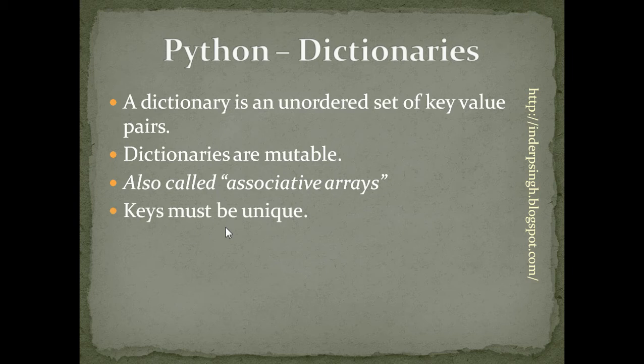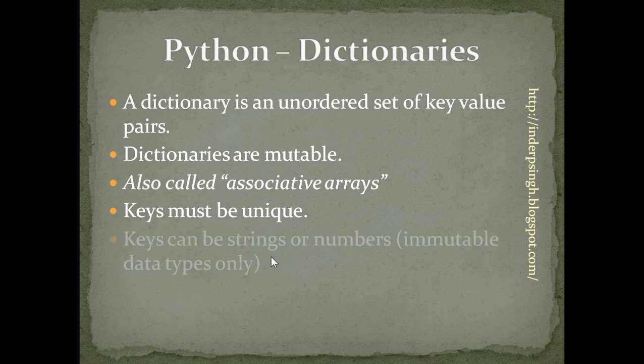The important thing is that in a dictionary, each key must be unique. The keys can be any immutable data type like strings or numbers. We cannot have mutable keys like lists.